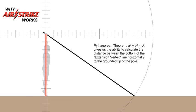Pythagorean theorem a squared plus b squared equals c squared gives us the ability to calculate the distance between the bottom of the extension vertex line horizontally to the grounded tip point of the pole.